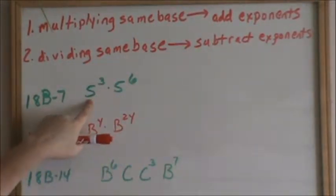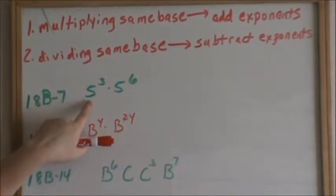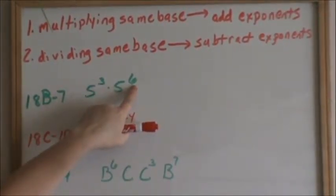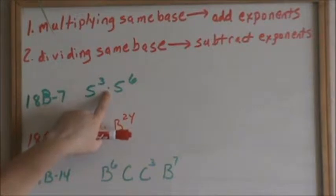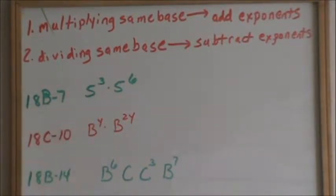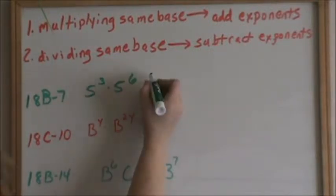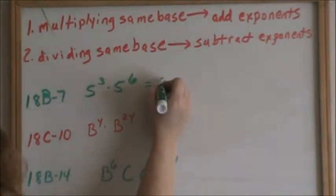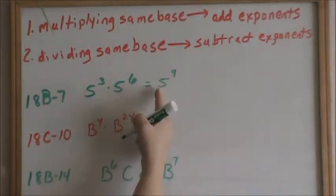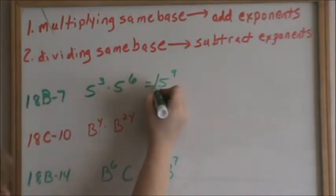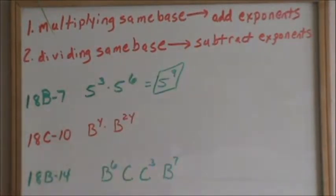Here on problem 18b7, just as a reminder, the 5 is your base, the 3 and the 6 are your exponents. So here on this problem, we have the same base and we are multiplying. So since we have the same base and are multiplying, we add our exponents. And so this just becomes 5 to the 9th. Since it is such a high exponent, there is no need to multiply that out to an exact number. So 5 to the 9th is your answer.